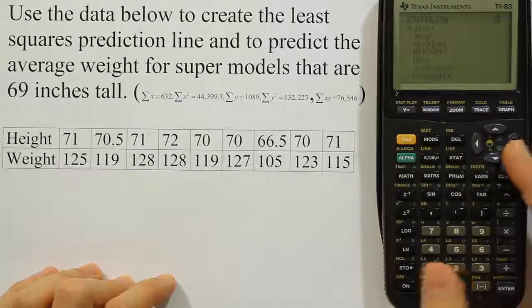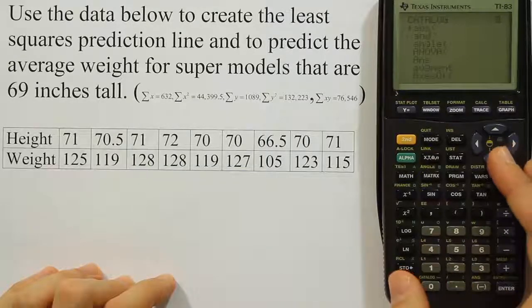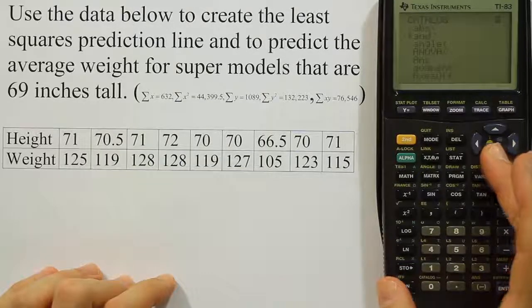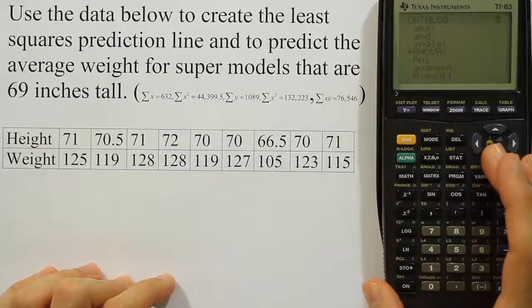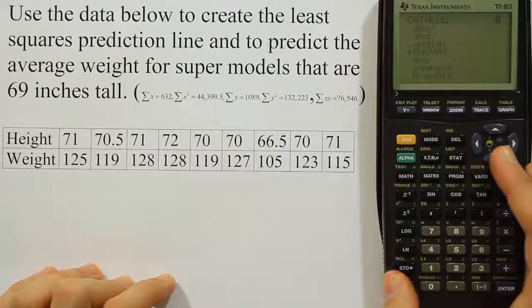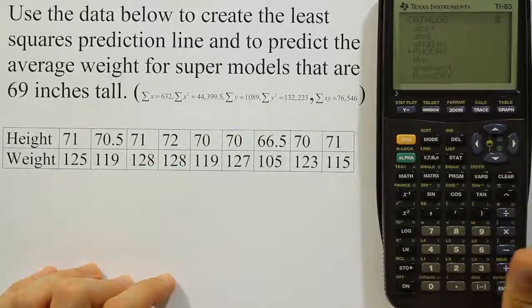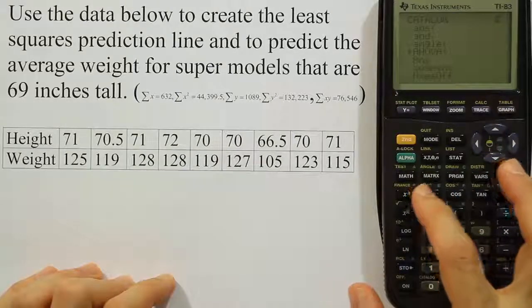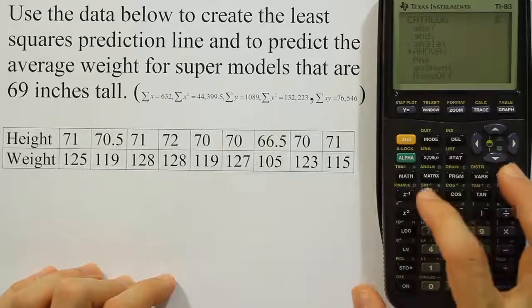When I get there it's going to be a bunch of phrases like absolute value, AND, angle, ANOVA, so on and so forth. What I would like to do is go down to where we find Diagnostics. If you actually push the D key, there's a little X inverse in my key that has a little D above it in green.